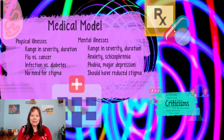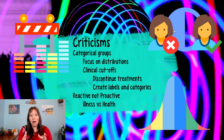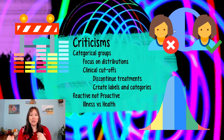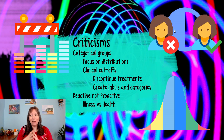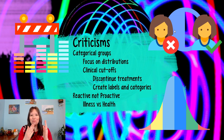Some criticisms include the fact that the medical model often requires things that are black and white — you're sick or you're healthy. With physical illness, it's easier to look at things in categories: you have an infection or you don't, there are cancer cells or there aren't, the leg is broken or it's not. However, when it comes to mental illness, things are much more gray and on a gradient. When we use the medical model to treat mental illness, we try to group people — you have depression or you don't, clinical depression or subclinical depression — and this creates a lot of clinical cutoffs.